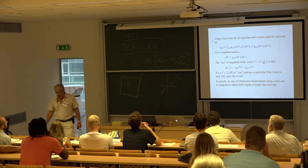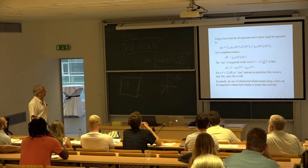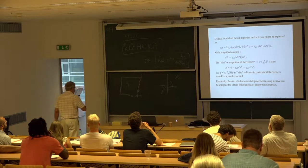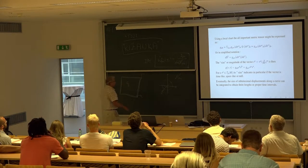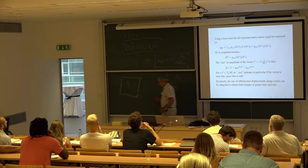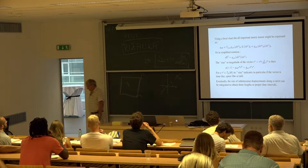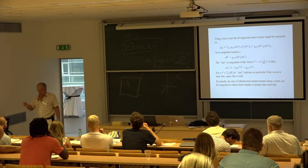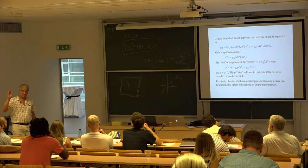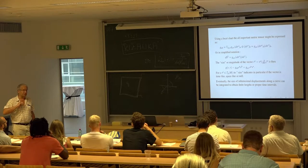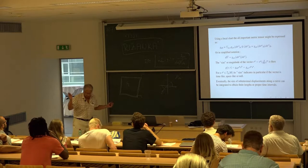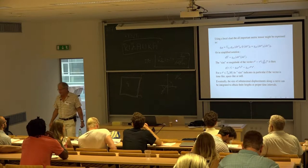We saw that this metric tensor was useful in, for instance, computing sizes of vectors, and of course indicating whether these vectors are timelike or spacelike. With that we could define the length of curves. If these curves were timelike, they would measure the proper time along the curve. If they were spacelike, they would really define a length.